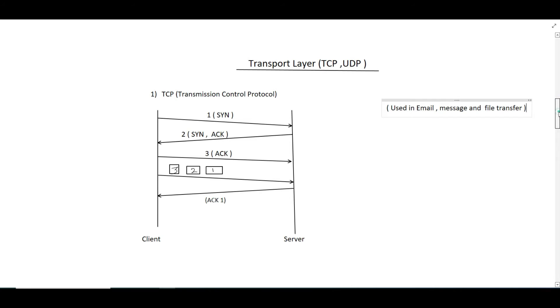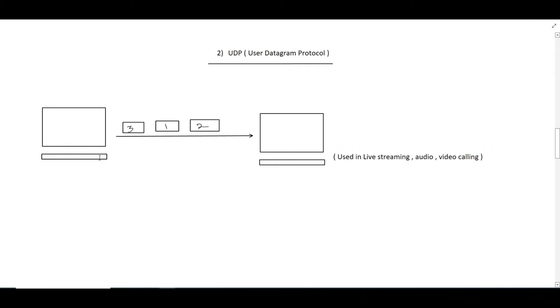Now let's look at UDP — the User Datagram Protocol. Suppose we have two systems: system 1 wants to transfer data to system 2. In UDP, packets are not arranged and are directly transferred over the internet to the second machine, so they can be received in any order. The receiver does not send acknowledgements to the sender. UDP is a connectionless protocol. It is used in live streaming, audio, and video because it is very fast — unlike TCP, there is no three-way handshake required, so there is no connection overhead.